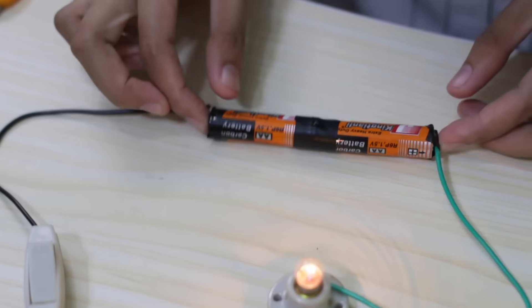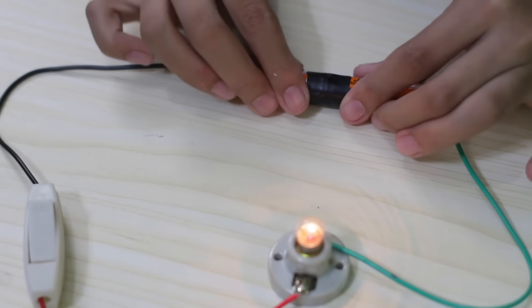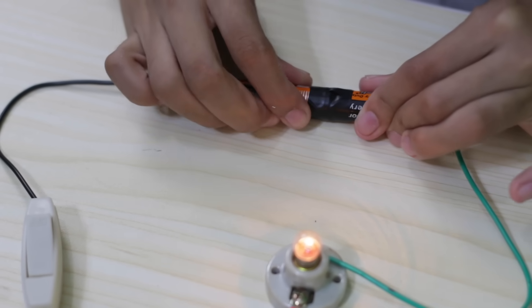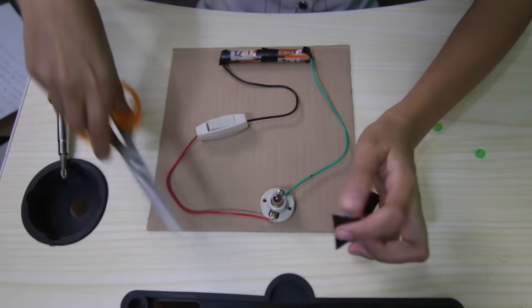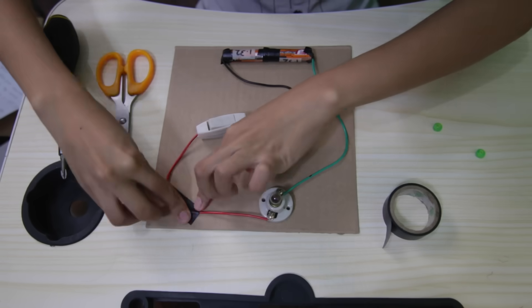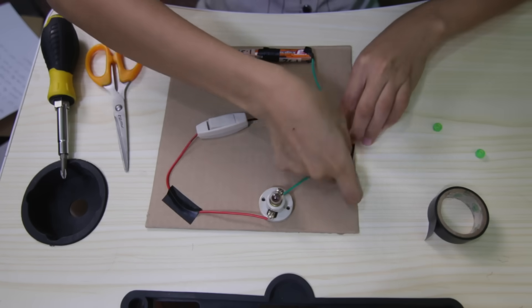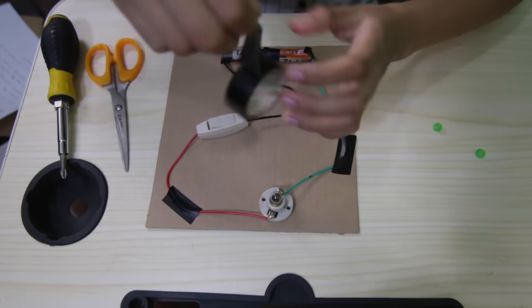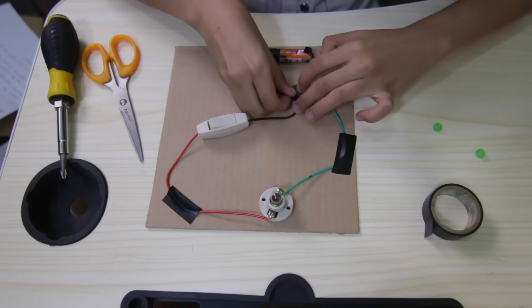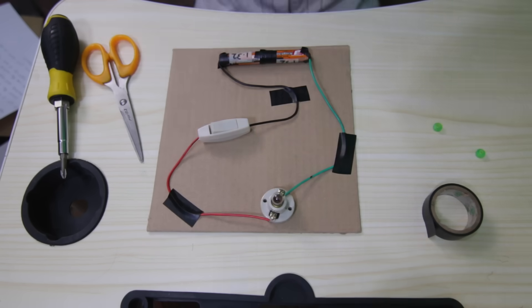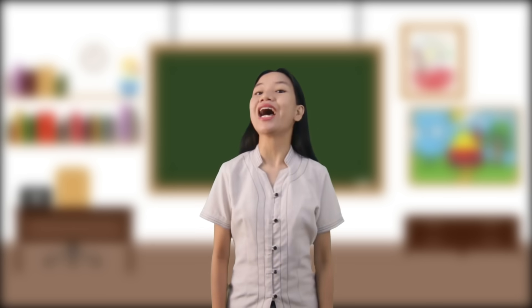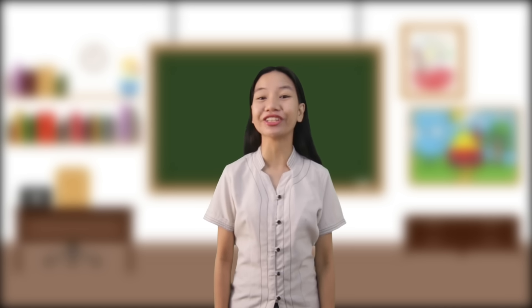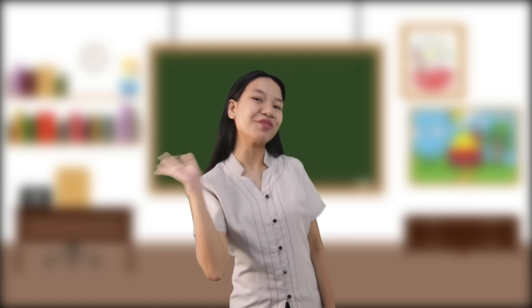Now switch on the switch. At this point, the bulb should light up. If not, you may request your parents' help. And the last step: secure your work on an illustration board or cardboard. If you light up the bulb, good job! If not, don't be sad — you may ask your parents' help. I hope you learned a lot and enjoyed our activity today. Till next time, goodbye!